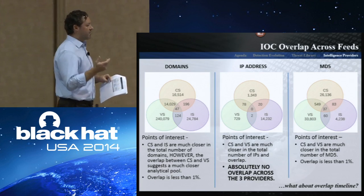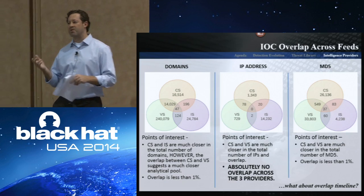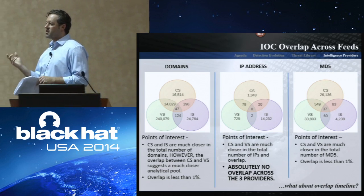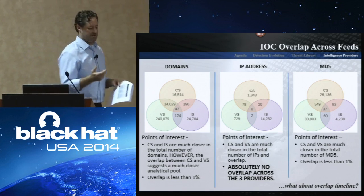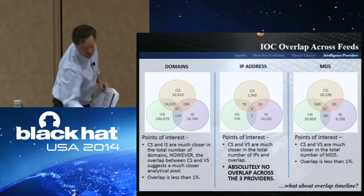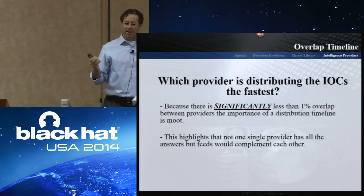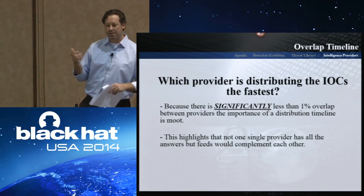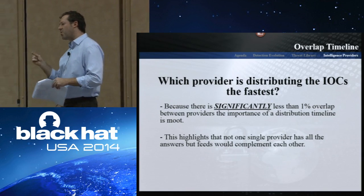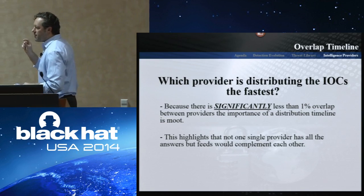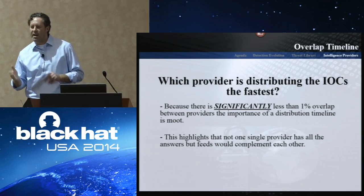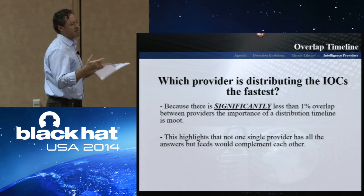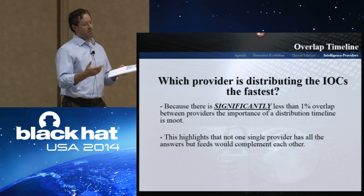How can that be? They're dealing with the same actors, the same adversaries, lots of times the same malware — yet not one IP address is shared between all of them. I admit I have access to what they're distributing; on the backend there's probably much bigger overlap. They may be choosing not to distribute something that's already out in the industry from open source. Who got the information out first? My managers want me to justify a paid feed. Because the overlap was so small — 2% of 1% — whoever got me the information first didn't really make much difference.